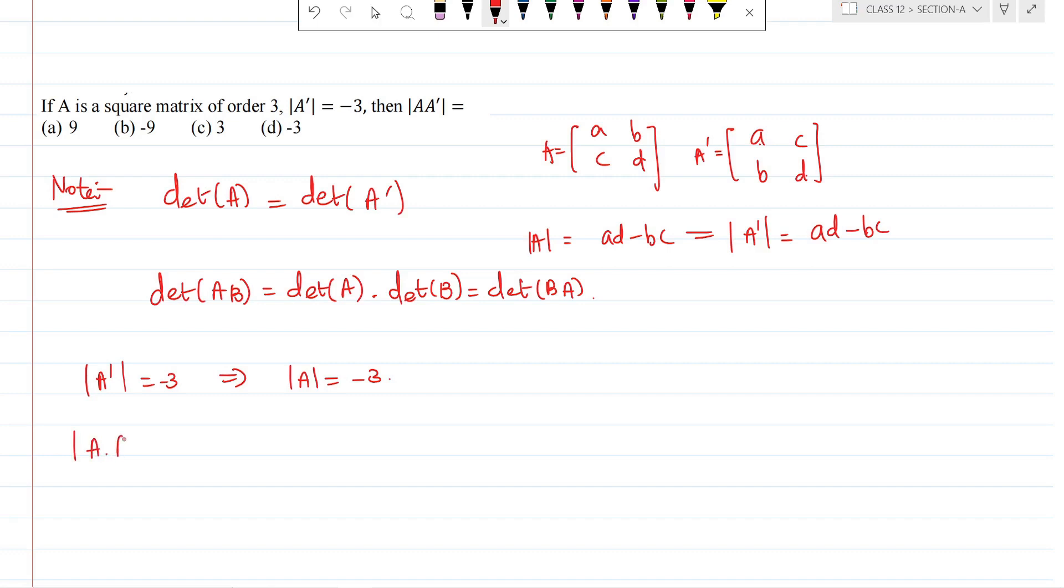Determinant of A times A dash, which means this is A, this is B. Determinant of A times determinant of A dash, which is equal to minus 3 times minus 3, you will get the answer as 9. So option A is the correct answer.